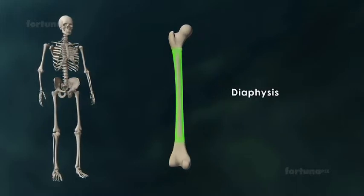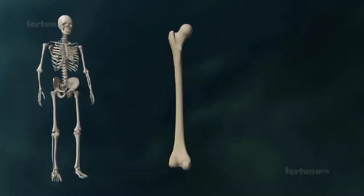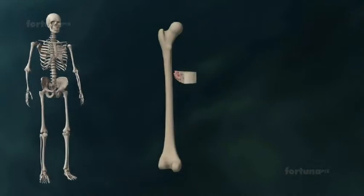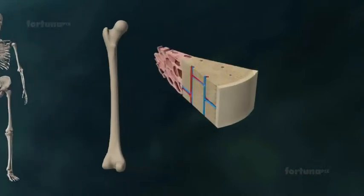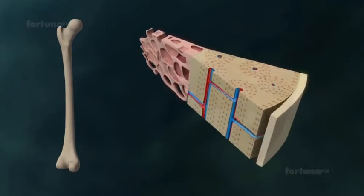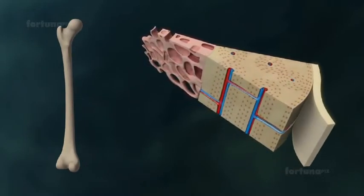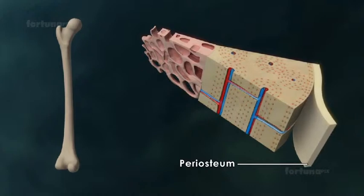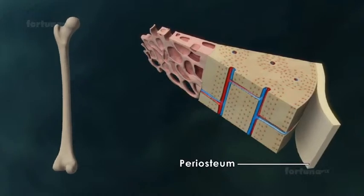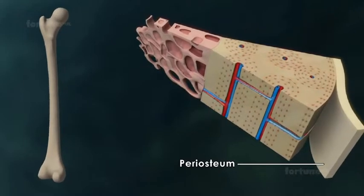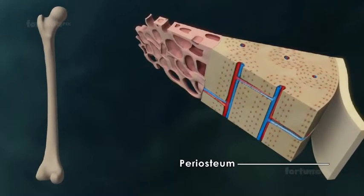A bone has an elongated hollow central body referred to as the diaphysis, and two terminal parts known as the epiphysis. All bones are surrounded by a tough layer of connective tissue known as the periosteum. It is through this tissue that blood vessels pass, carrying oxygen and nutrients to the bone.